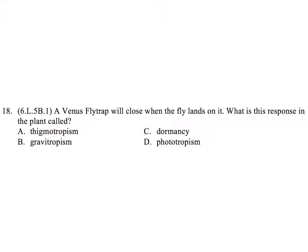Question 18. A Venus flytrap will close when the fly lands on it. What is this response in the plant called? A. Thigmotropism. B. Gravitropism. C. Dormancy. D. Phototropism.